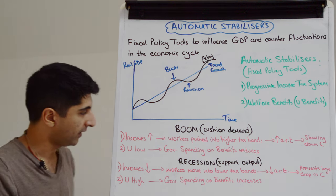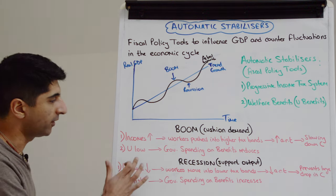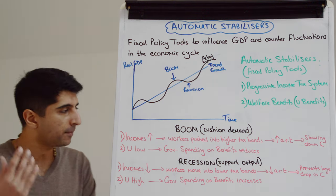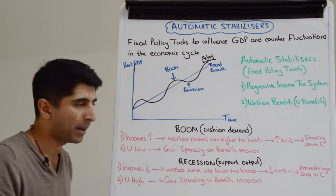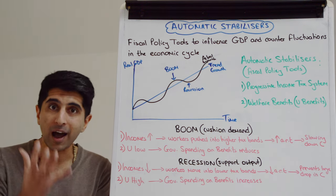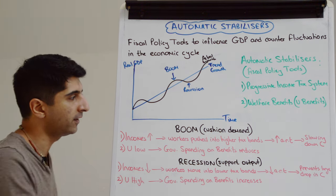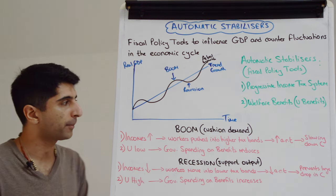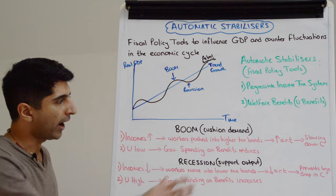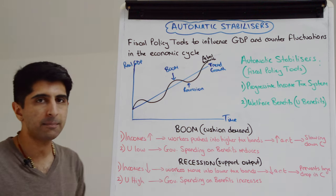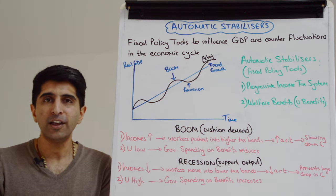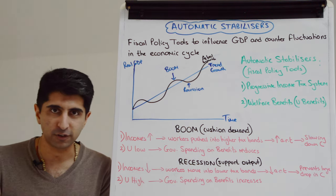What about welfare benefits? Well, in a boom unemployment is going to be low and therefore government spending on benefits — especially unemployment benefits — is going to be lower. That's also going to help cushion demand, and all of this put together means the extent of the boom is going to be lower. The risk of wild demand-pull inflation is going to be much lower.